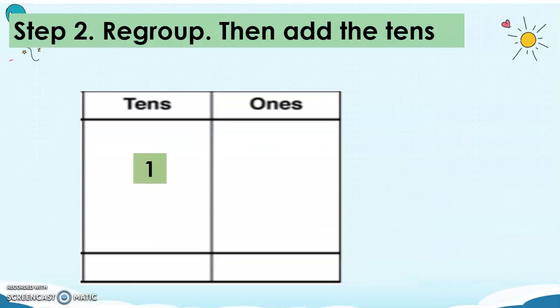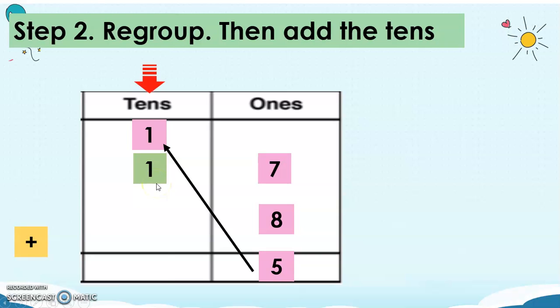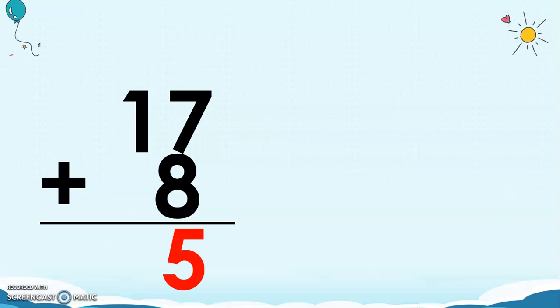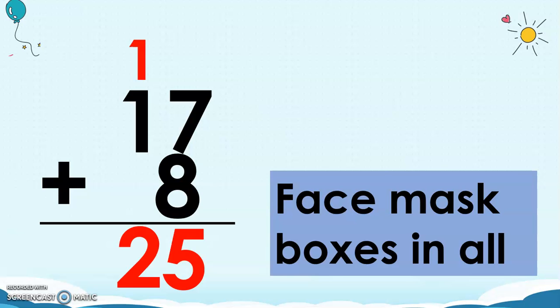So again, we will regroup, then add the tens. So 17 plus 8, 7 plus 8 is 15, but we're going to regroup 1. So we will just have 5 here and then we will have 1 in the tens place and we're going to add 1 plus 1, then we will have 2. So the answer is 17 plus 8 equals 25. The 2 boys donated 25 face mask boxes in all.